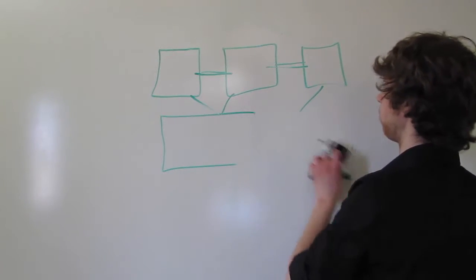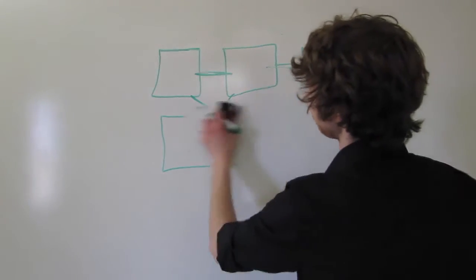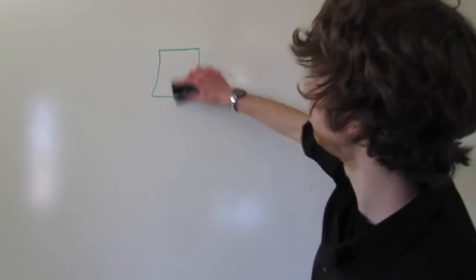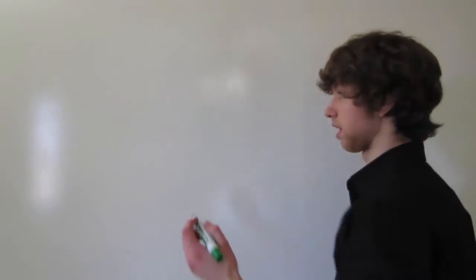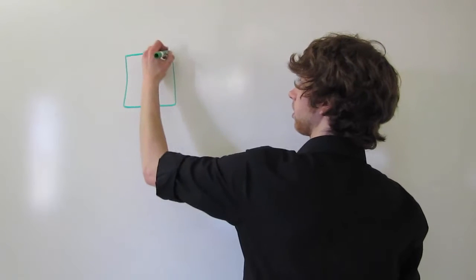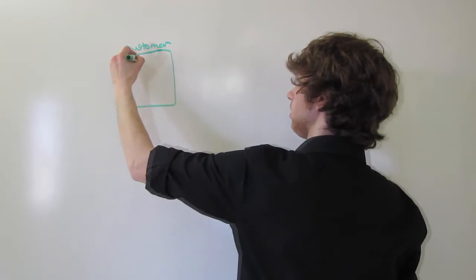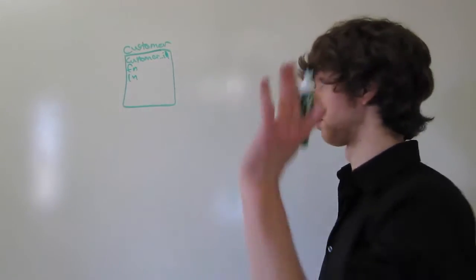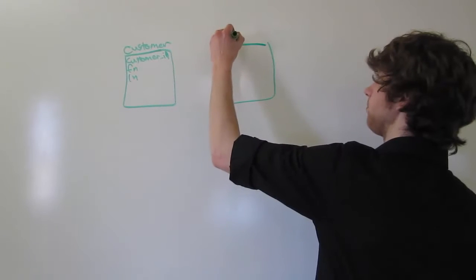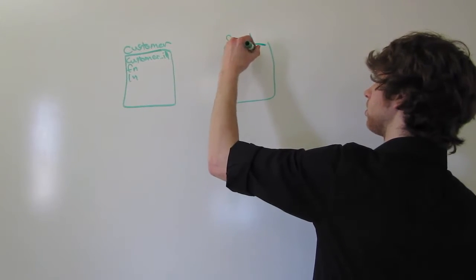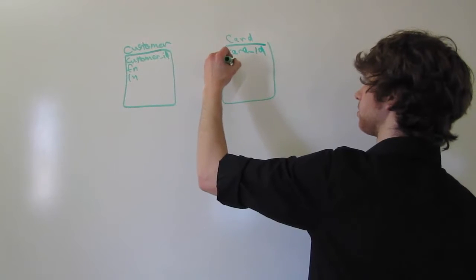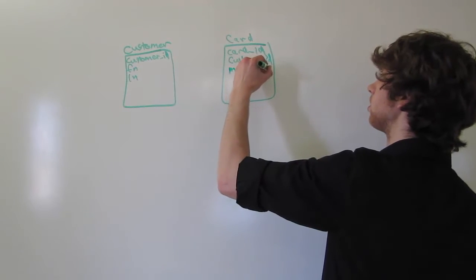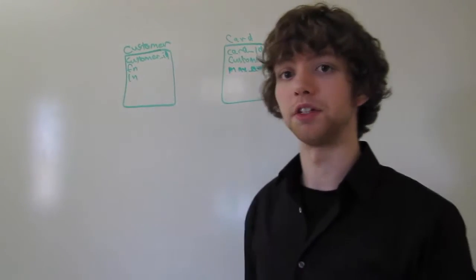Let's go through the example we had before with the cards and the customer, but we're going to add a new table. This is the customer table — it has a customer ID, a first name, last name, and any other info you want to store about the customer. Then we had the card table with a card ID, the customer ID, the max amount, interest rate, or whatever else you want to store about the card.